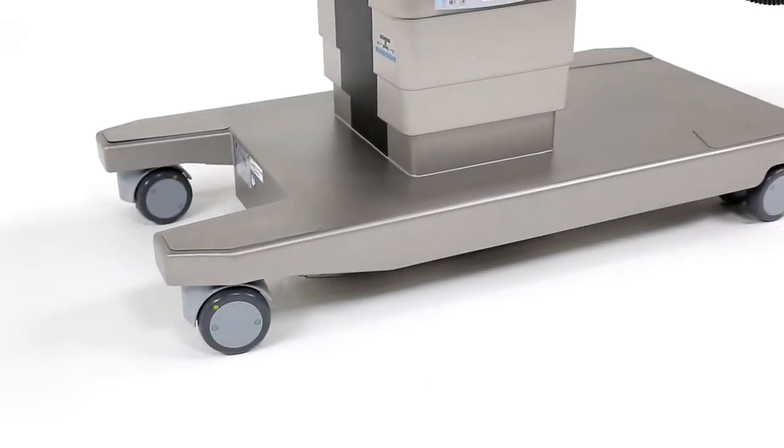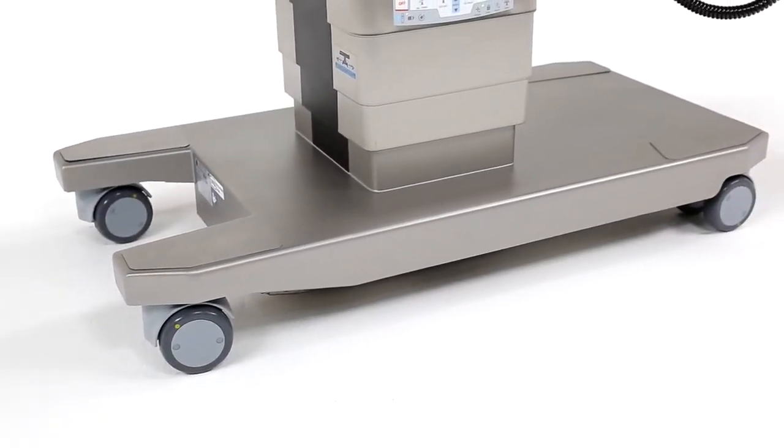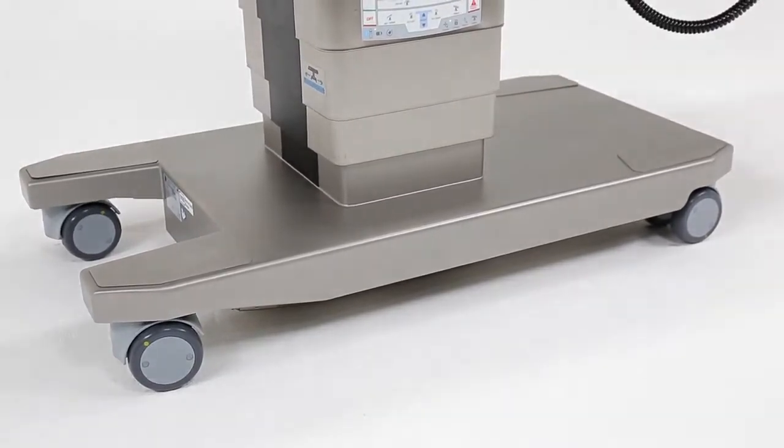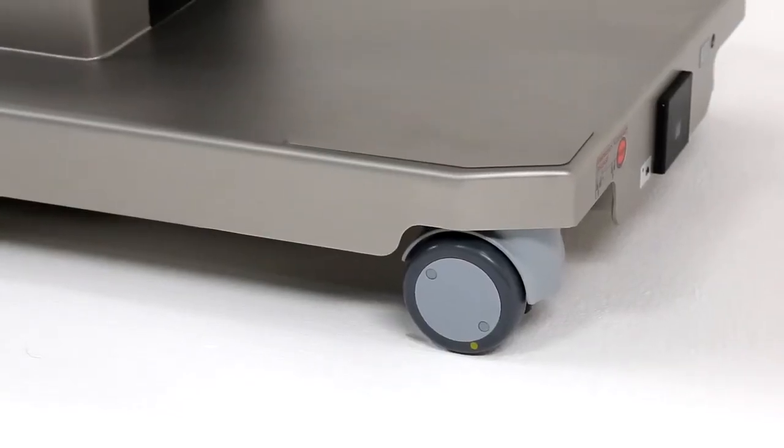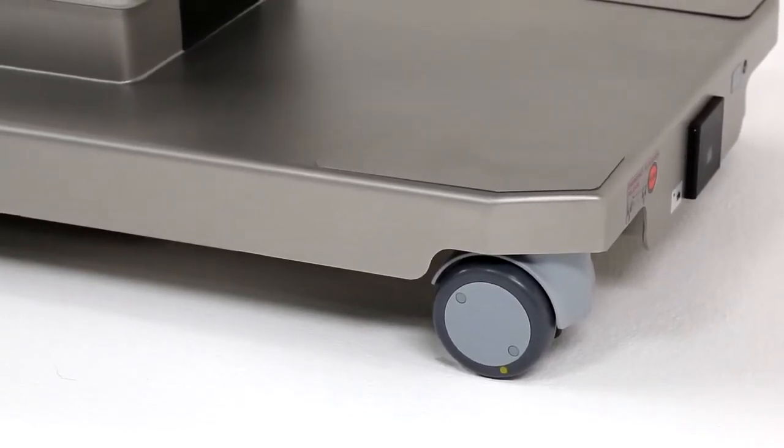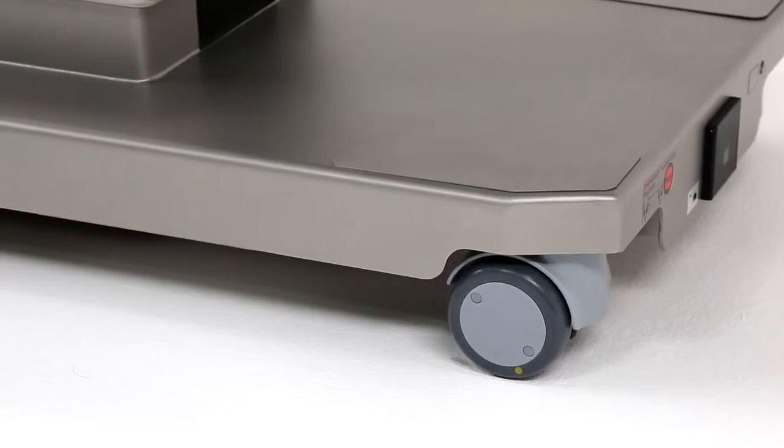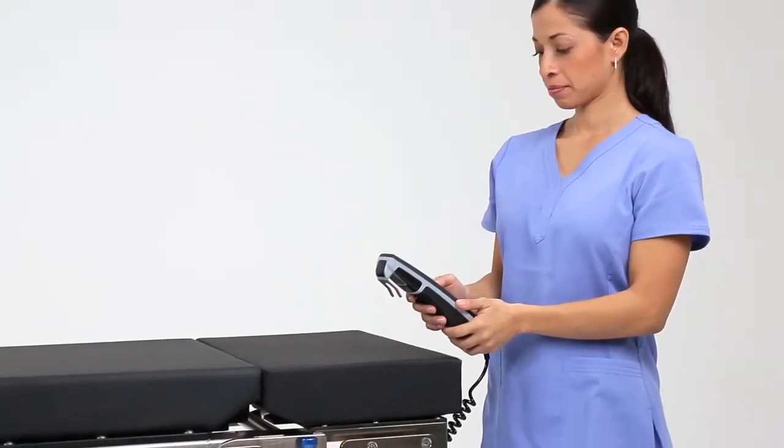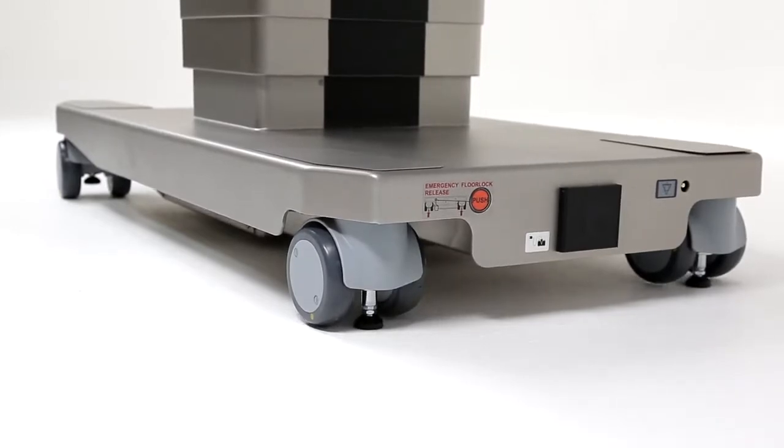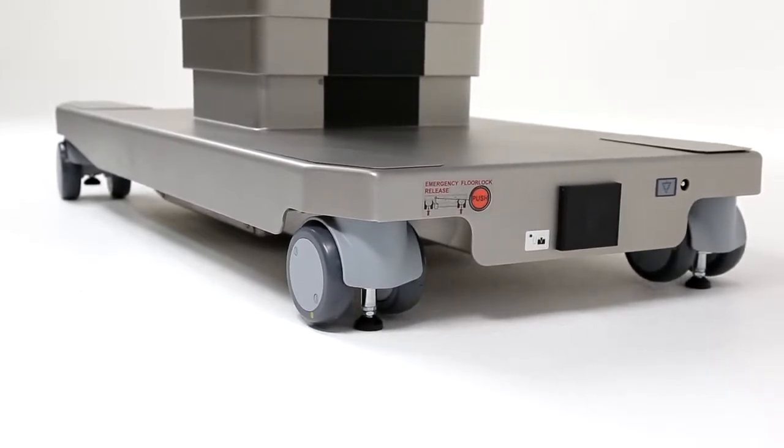From the ground up, the TruSystem 7000 was designed to deliver meaningful innovations that help hospitals care for patients, not struggle with difficult equipment. Larger, low-friction wheels were custom designed to improve mobility and withstand heavy use in an OR setting. The floor locks are positioned at the farthest corners of the base, giving the table the most solid foundation possible.